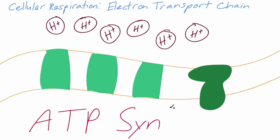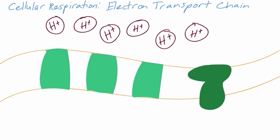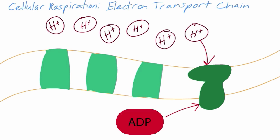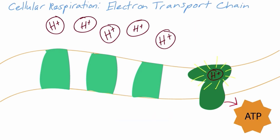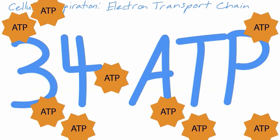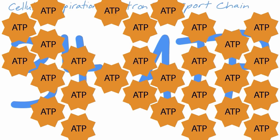They move through a protein called ATP synthase. The movement of hydrogen ions through this protein gives ATP synthase the power to convert ADP into ATP by adding on that third phosphate group. This step can produce up to 34 ATP for your body to use as energy.